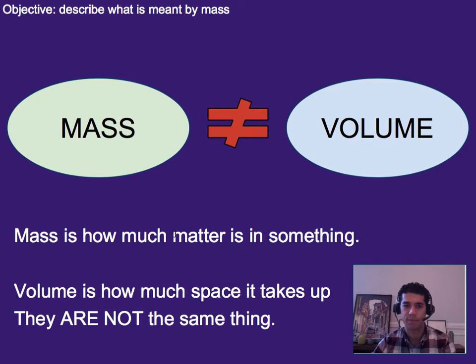Mass is how much matter is in an object. It's not volume. While they are very much related, they are not the same thing. Mass is how much stuff or matter is in an object versus volume is how much space it actually takes up.